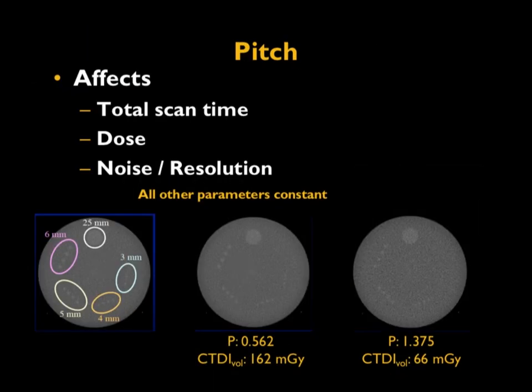Pitch affects total scan time, radiation dose to the patient, and can impact noise and resolution. Shown here are low-contrast resolution phantoms used for evaluating contrast resolution in CT, scanned at different techniques. The middle image is obtained with a pitch of 0.562 compared to an image obtained with a pitch of 1.375. Even though the radiation dose is lower at the higher pitch, there is a loss in contrast resolution — that is the trade-off between different pitch values.